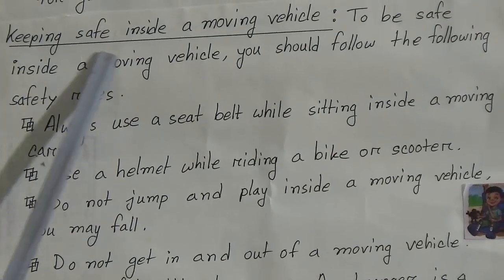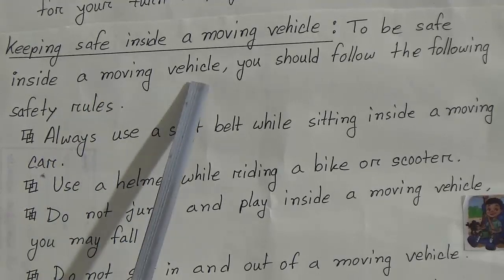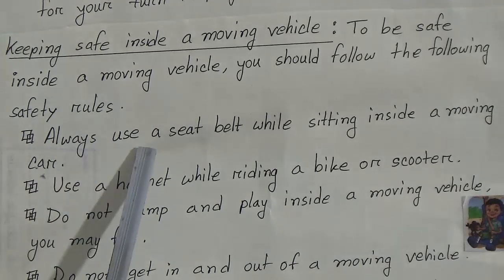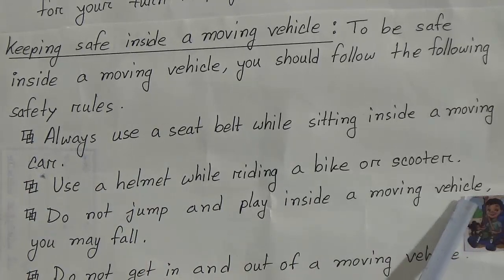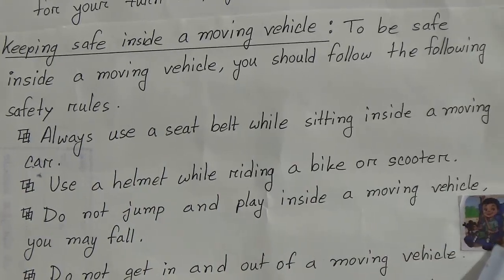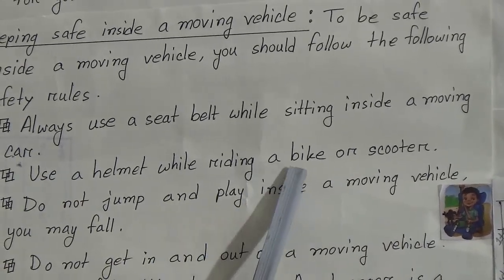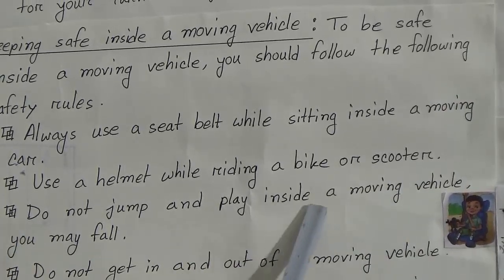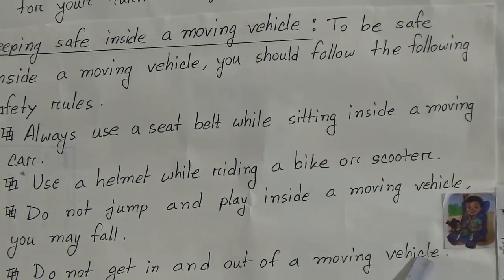Next topic is keeping safe inside a moving vehicle. To be safe inside a moving vehicle, you should follow these safety rules: always use a seat belt while sitting inside a moving car — you can see the picture of a child using a seat belt. Use a helmet while riding a bike or scooter. Do not jump and play inside a moving vehicle — you may fall. Do not get in and out of a moving vehicle while it is moving.